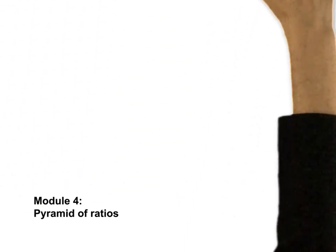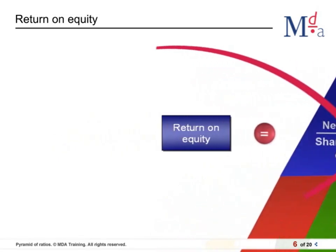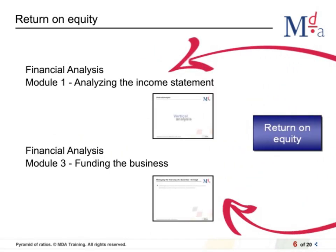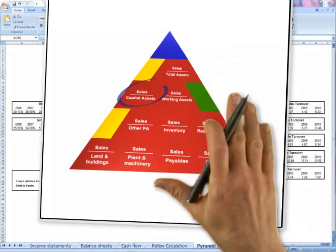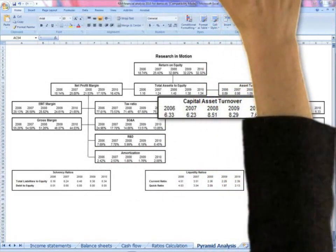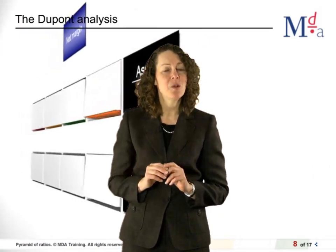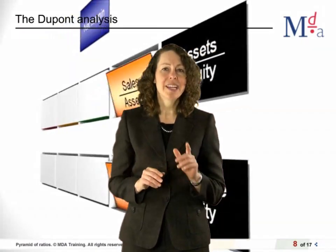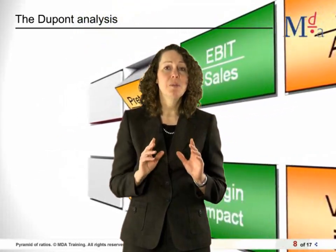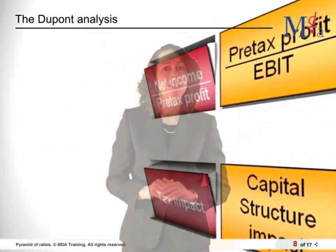In module four we put all of the analysis from the previous modules together and teach you the pyramid of ratios to unlock the drivers of financial performance. This module also includes an Excel workbook that contains ratio calculations and a constructed pyramid that can be used for any organization.